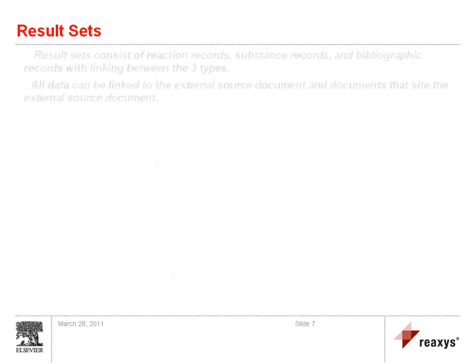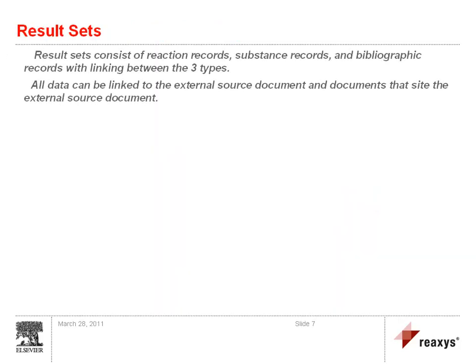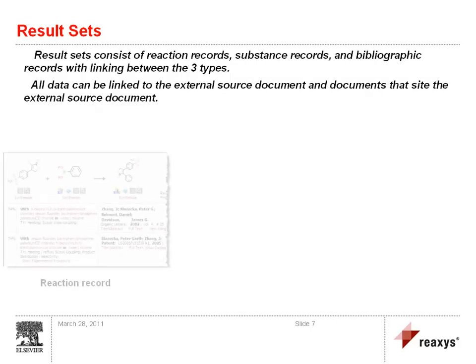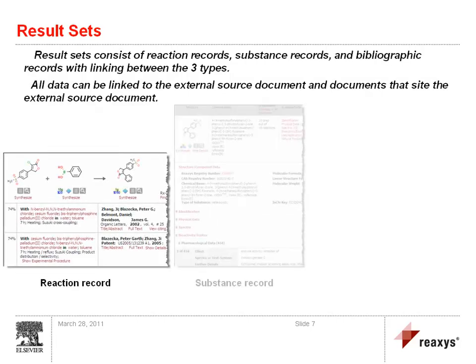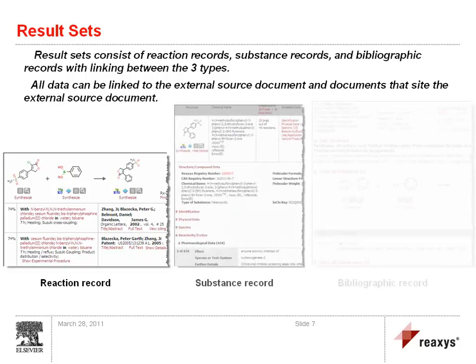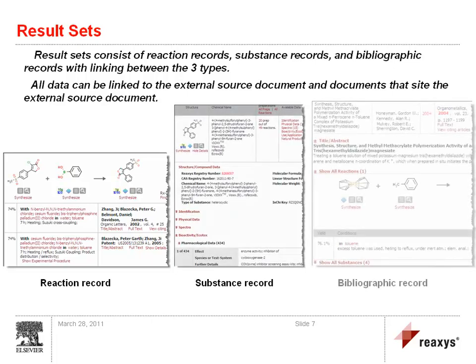Result sets consist of reaction records, substance records, and bibliographic records with linking between the three types. All data can be linked to the external source document and to documents that cite the external source document.